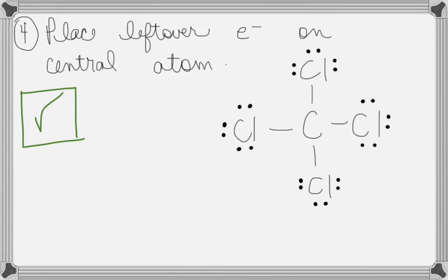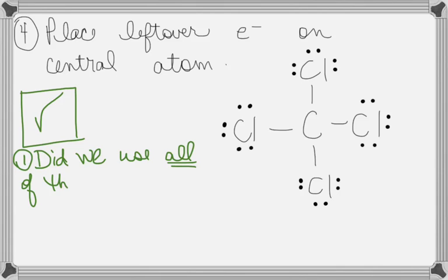The first thing we want to check is, did we use all of the electrons? What does that mean? It means I had 32 to use. Did I use all 32? And the answer is yes. The second thing I want to check, does every atom have an octet?